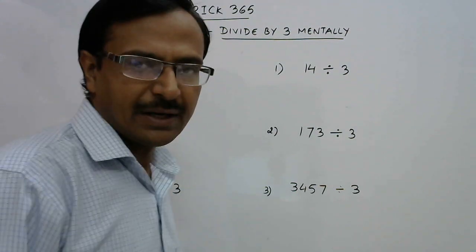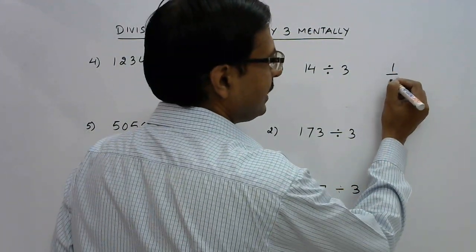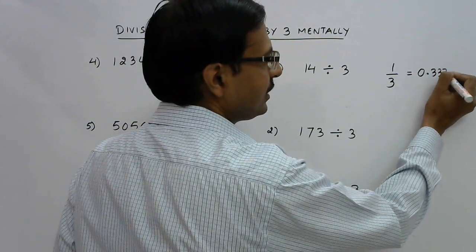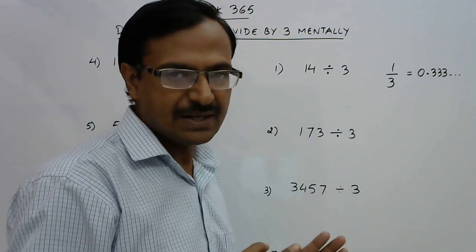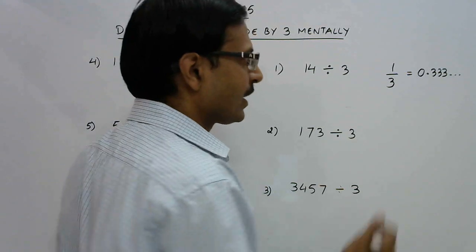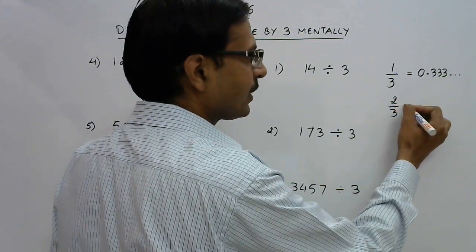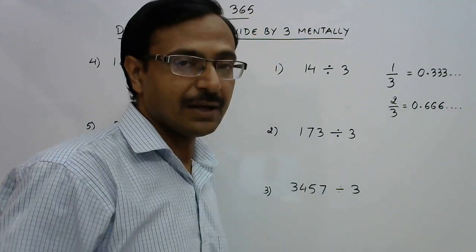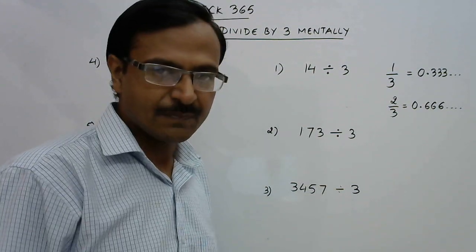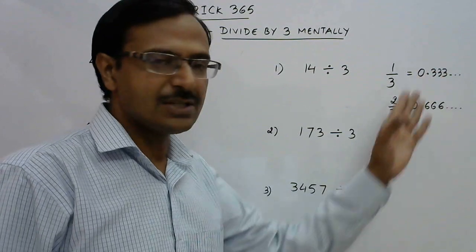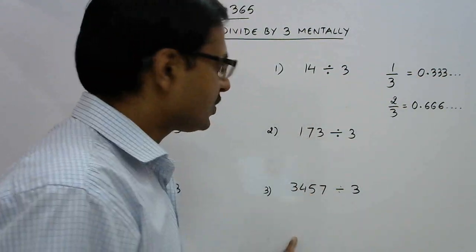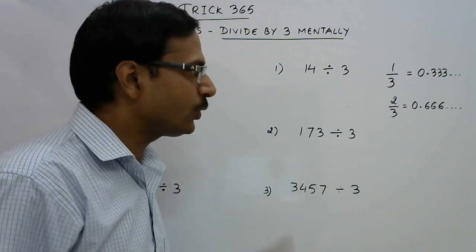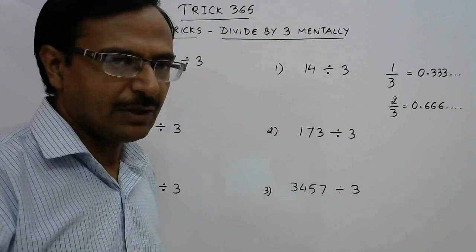Always remember that whenever we have 1/3, it is 0.333... — the digit three repeats itself after the decimal place. Whenever we have 2/3, it is 0.666... — the digit six repeats itself after the decimal place. If you have knowledge of these two things, then every calculation will be done orally and the answer will be found in decimals. For this we will use the Vedic mathematics method of dividing numbers.